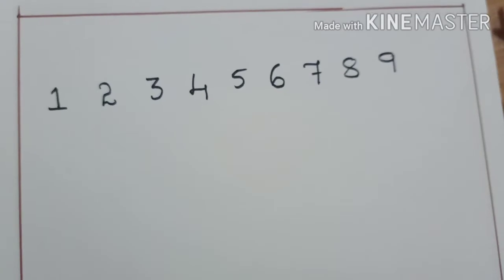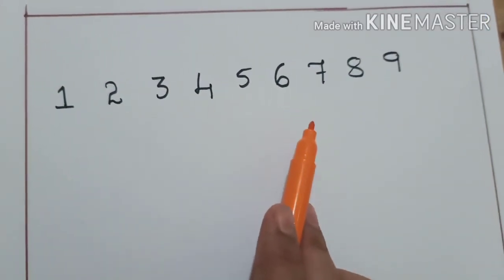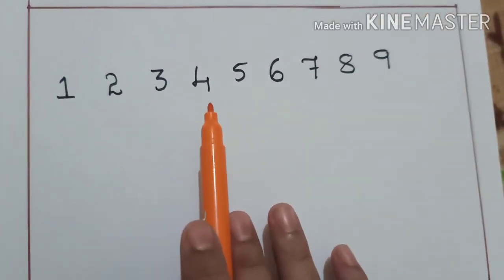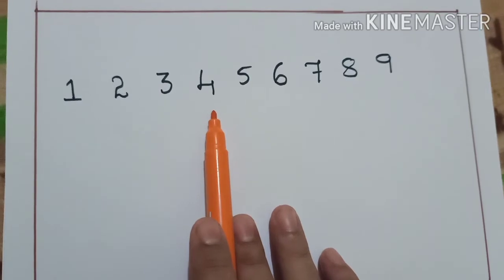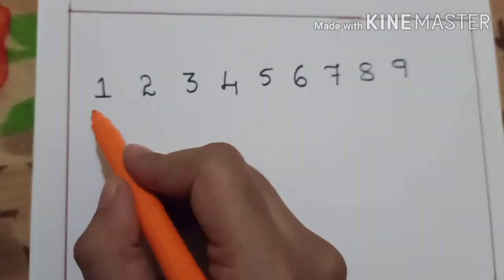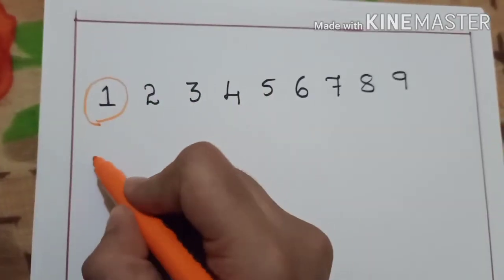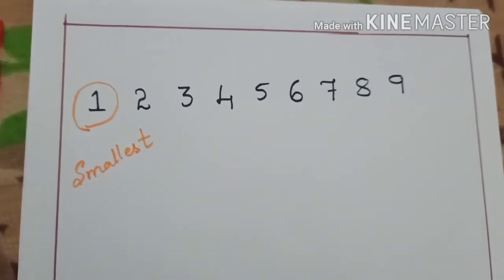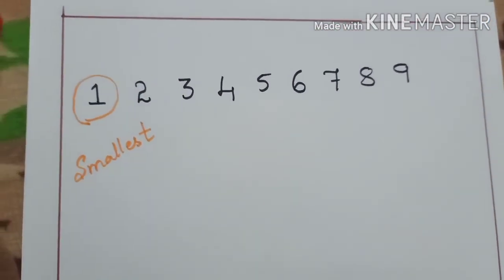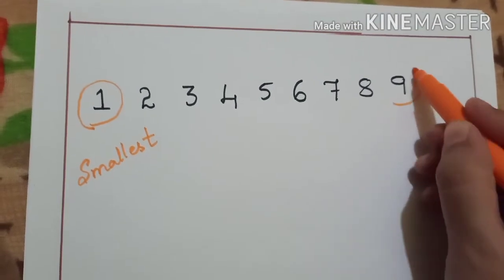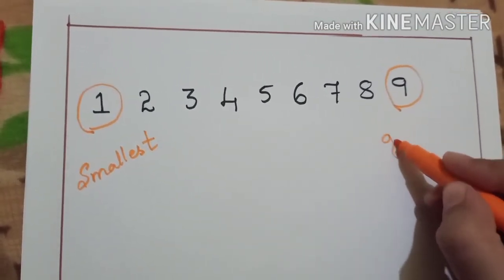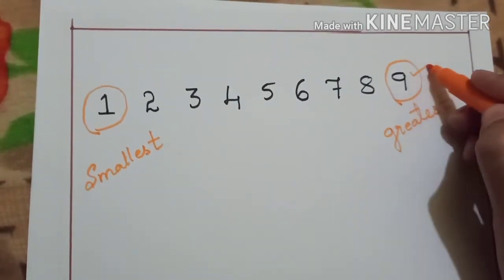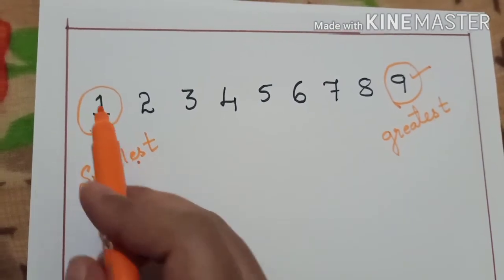Dear children, I have written 9 digits here. Can you see? From 1 to 9. Can you identify the smallest digit here? 1 is the smallest digit, right? Which is the biggest digit then? Obviously, the greatest one-digit number is 9.